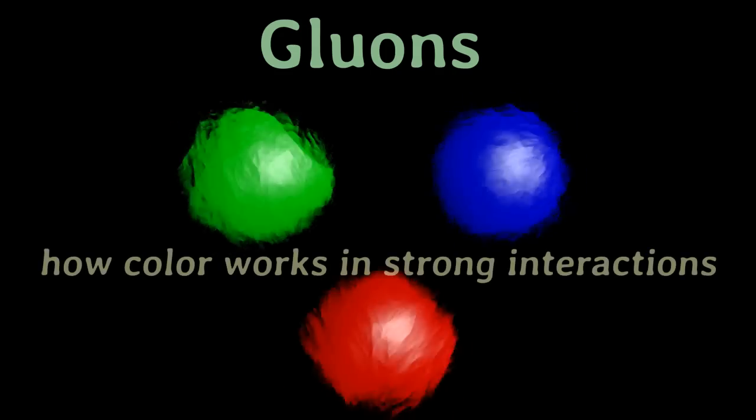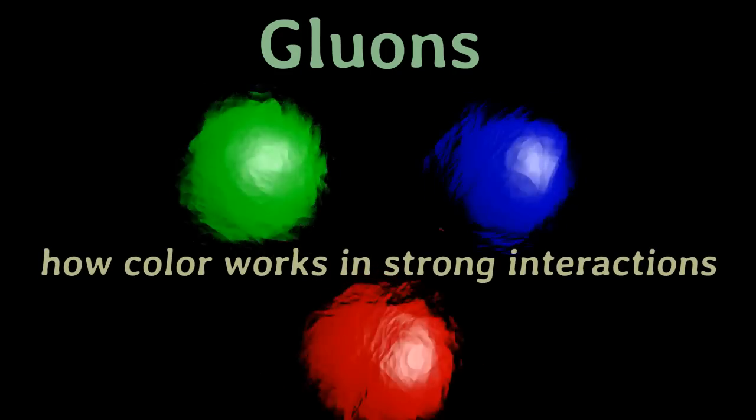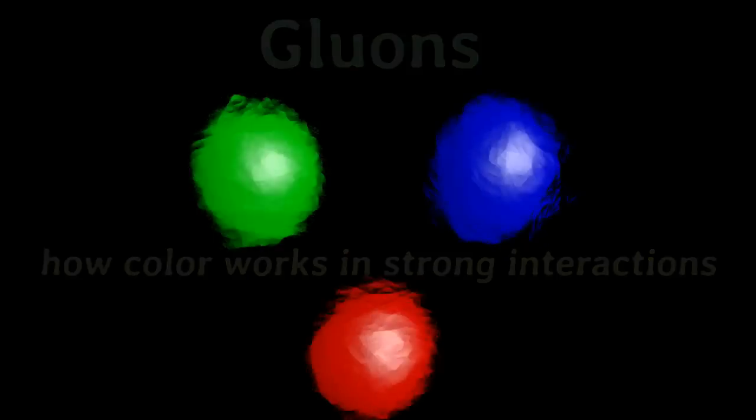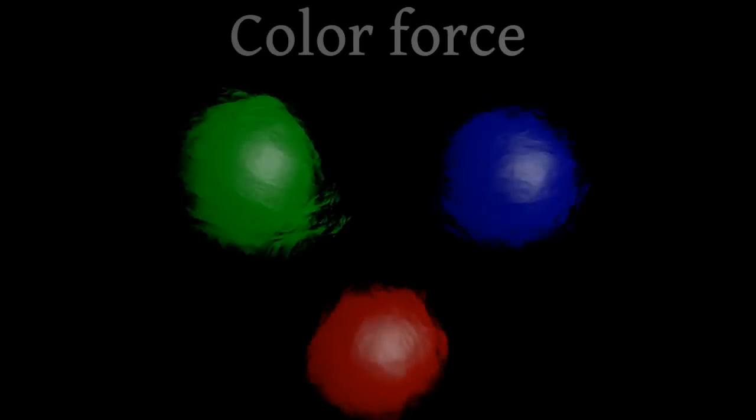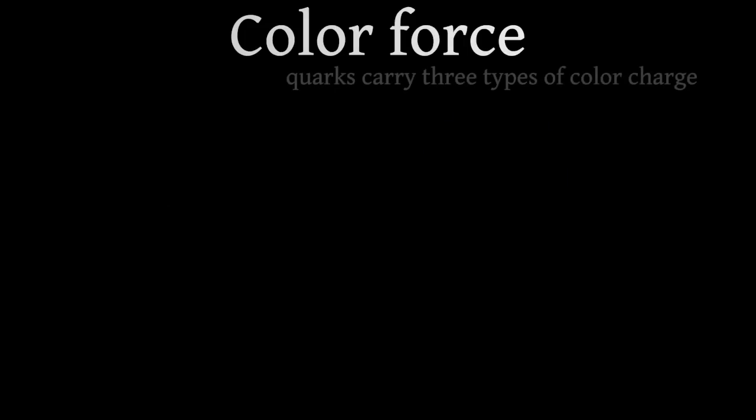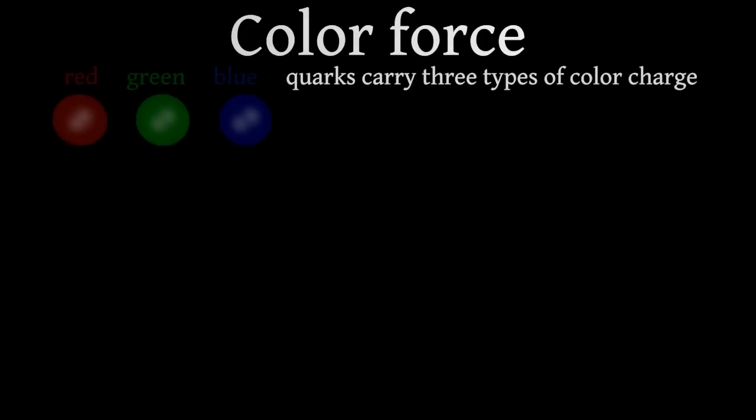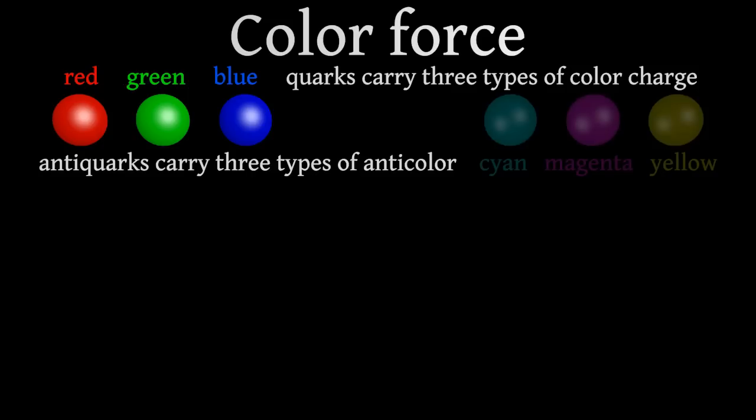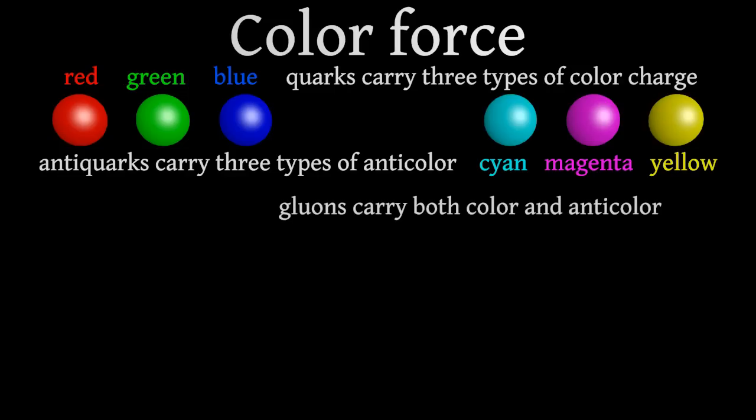A proton consists of three quarks of different colors. Gluons glue these quarks together. Quarks carry three types of color charge: red, green, and blue. Antiquarks carry three types of anti-color: cyan, magenta, and yellow. Gluons carry both color and anti-colors.